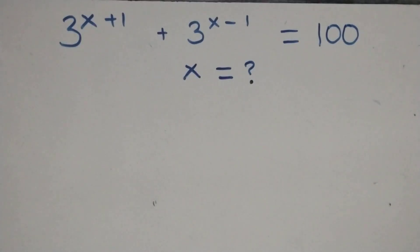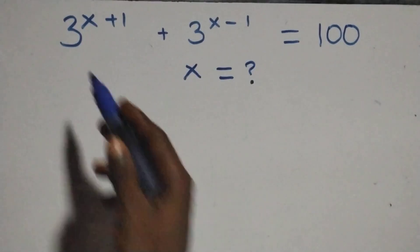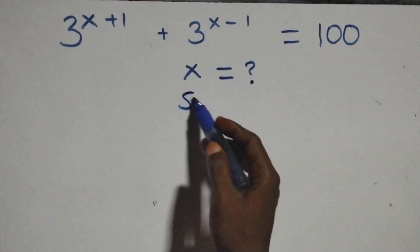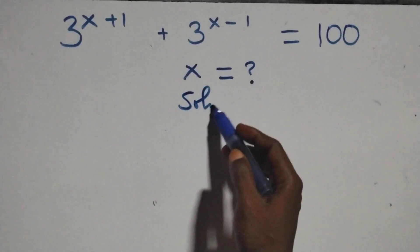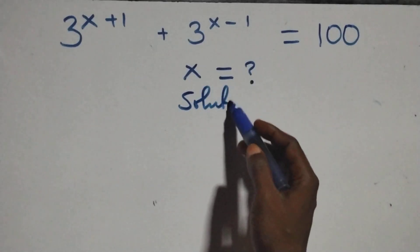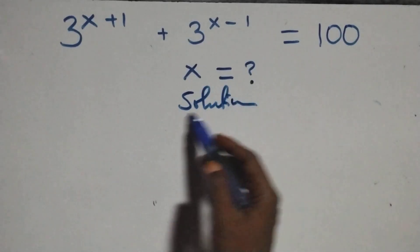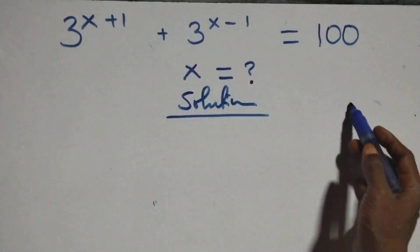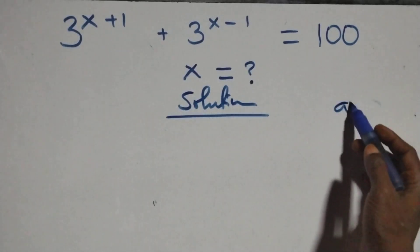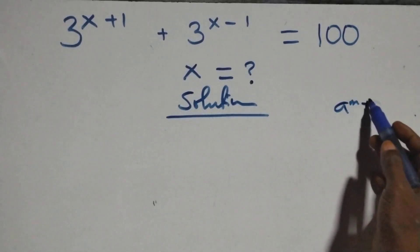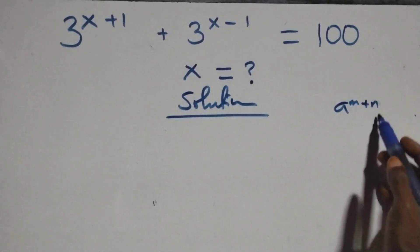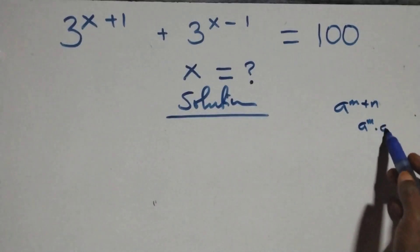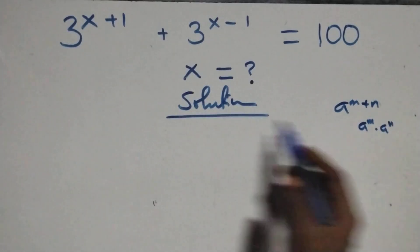Hello, you are welcome. How to solve this nice exponential equation. From what we have here, this follows: when we have a raised to power n plus n, this is the same thing as a raised to power n times a raised to power n.